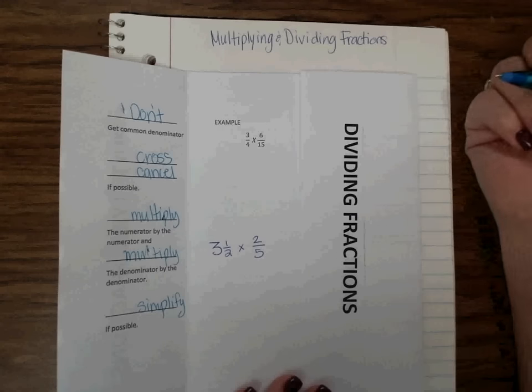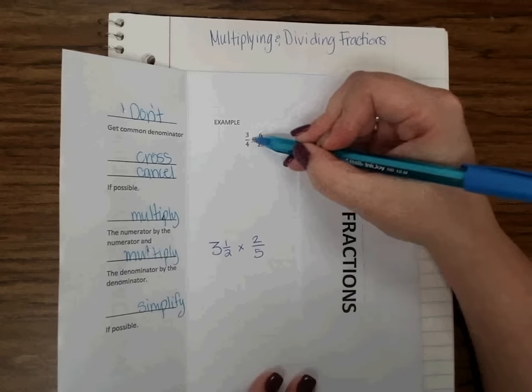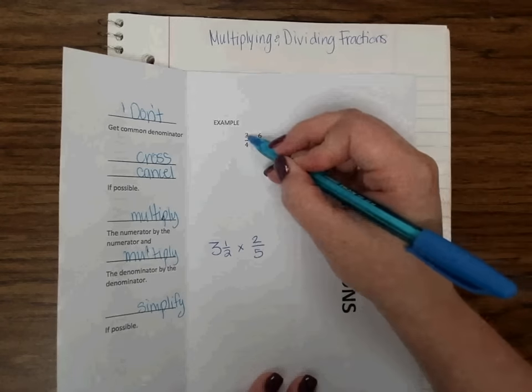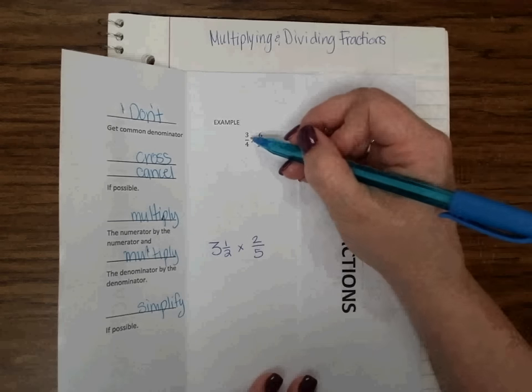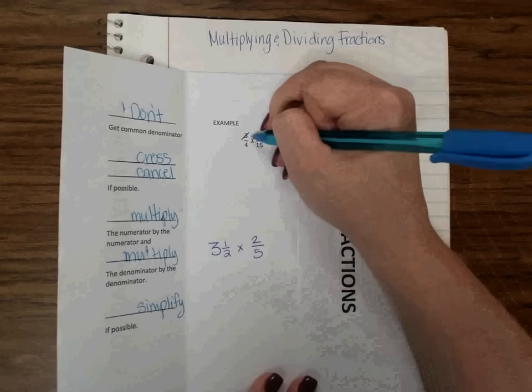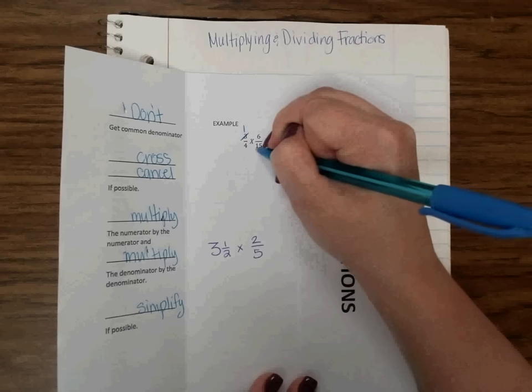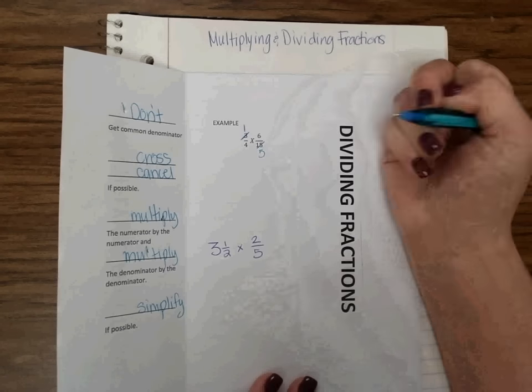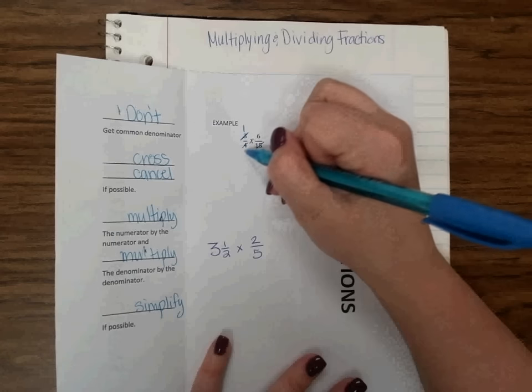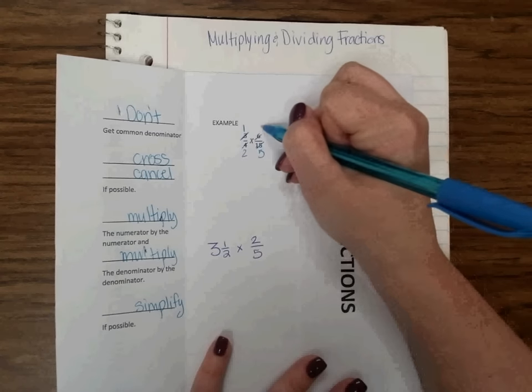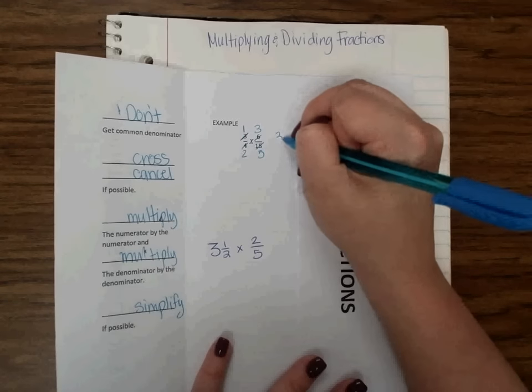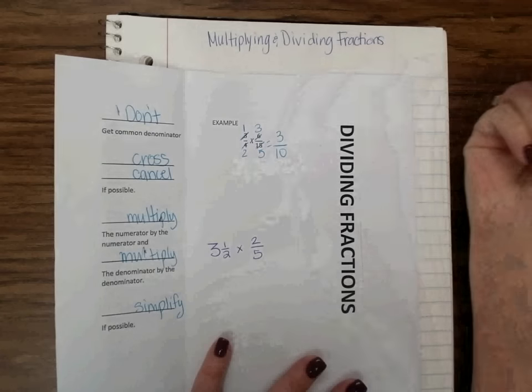So let's look at the example that we have. I have 3 fourths times 6 fifteenths. If I look at this, and I look at my crosses, I have 3 and 15 are crosses. If I divide 3 by 3, I can also divide 15 by 3. So I can cross cancel or cross reduce. 3 divided by 3 is 1. 15 divided by 3 is 5. I can look at my other crosses. 4 and 6 can both be divided by 2. So half of 4 is 2, half of 6 is 3. And then I'm just multiplying my numerators. So 1 times 3 is 3, 2 times 5 is 10. And my answer is 3 tenths.